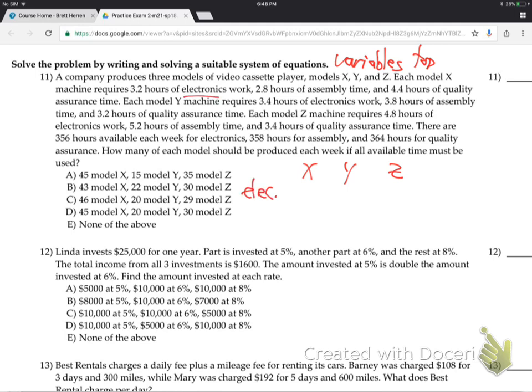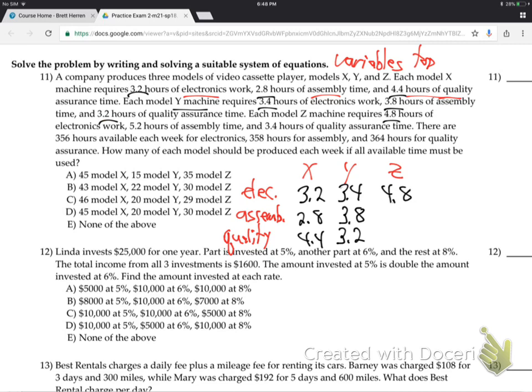Down the side, we put the electronics, the assembly, and the quality stuff. And just put in, just go back and put in the numbers. So it says 3.2 hours of electronics, 2.8 assembly, 4.4. I'm doing this wrong - 2.8, 4.4. It goes downward because that's all X. And then next comes for Y, 3.4 and 3.8 and 3.2. And then for Z, 4.8 and 5.2 and 3.4.